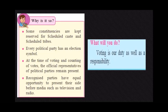At the time of voting and counting of votes, the official representatives of political parties remain present. They help voters find their names in the voters list, assist senior citizens and handicapped voters in reaching polling stations, and ensure transparency during the electoral process. They also remain present during the counting of votes to ensure no malpractice is occurring and to keep track of the number of seats their party has won.